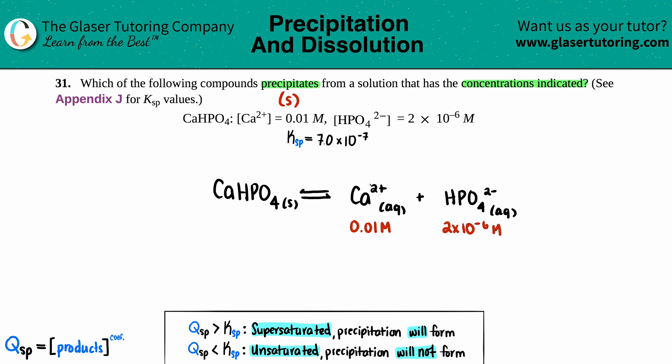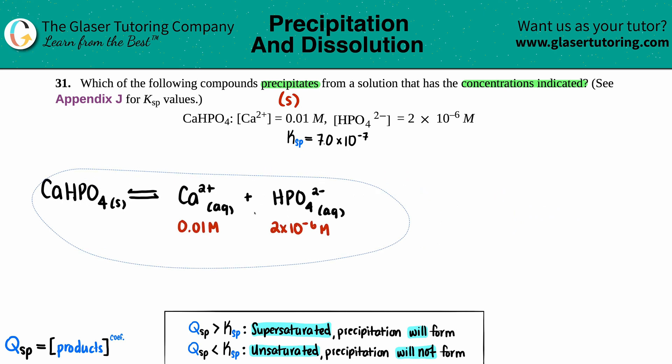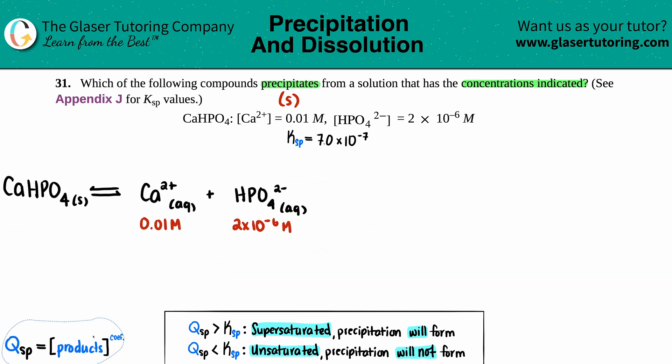And the hydrogen phosphate is 2 times 10 to the negative 6 molarity. I'm going to put this off to the side because I'm going to use it to find Qsp. Qsp is the same formula as if you would find Ksp. It's just equal to the products raised to their coefficients.